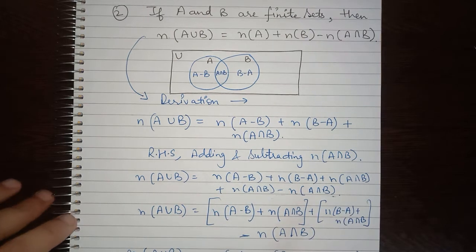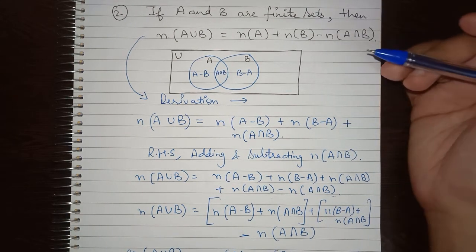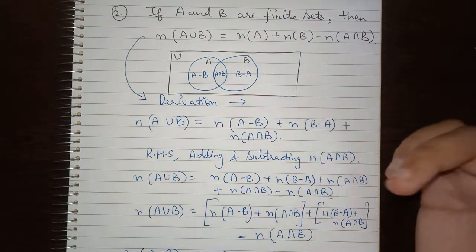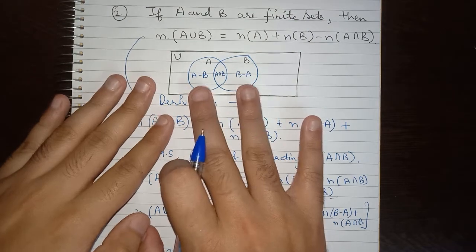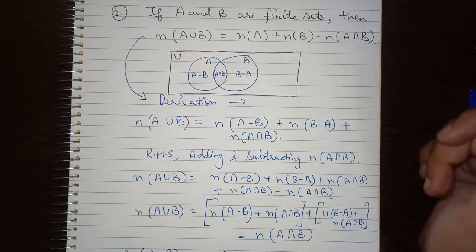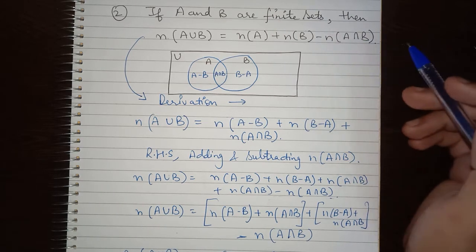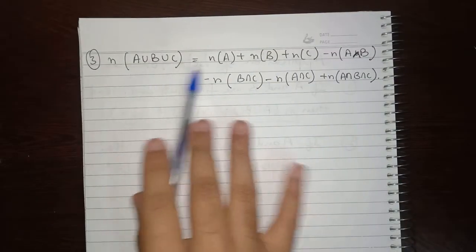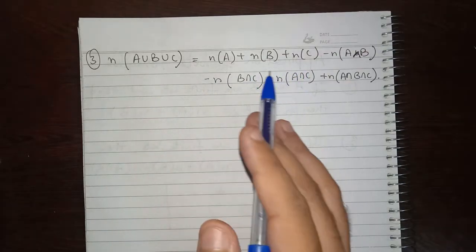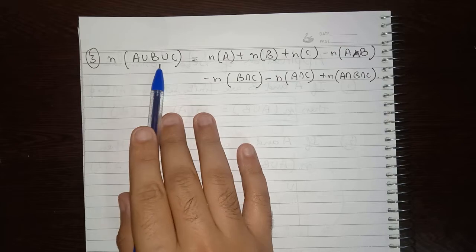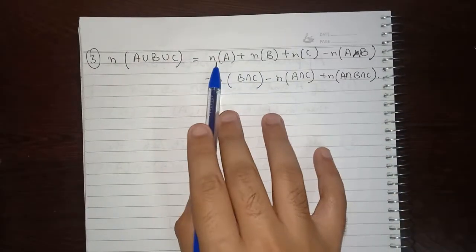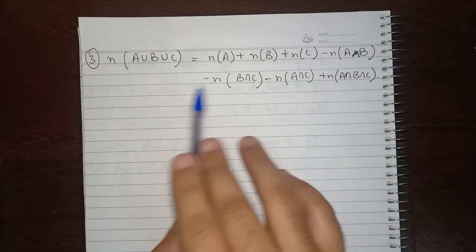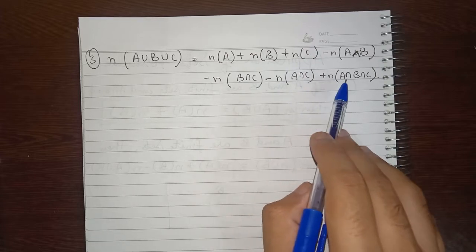To understand this simply: A and B are common in one term, A and C are common in the other, and A, B, and C together form the intersection of all three. So if we simplify, A, B and C common gives us A intersection B intersection C. This gives us our first equation.